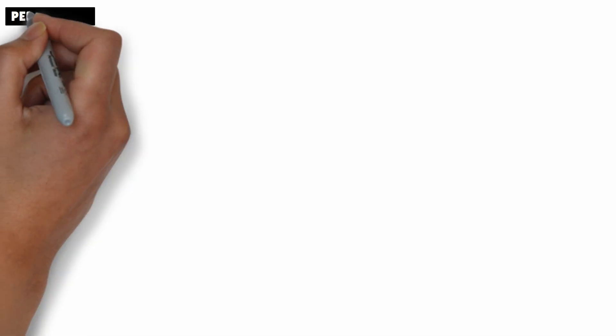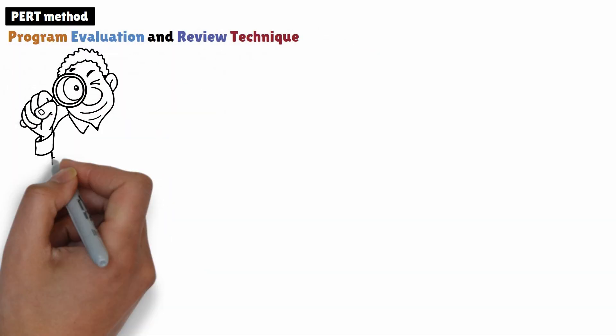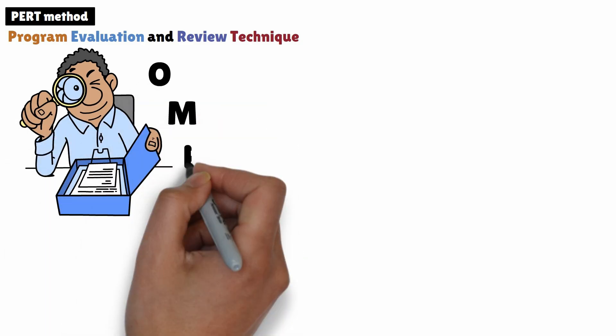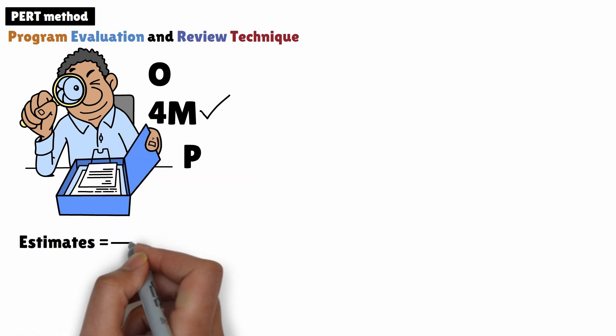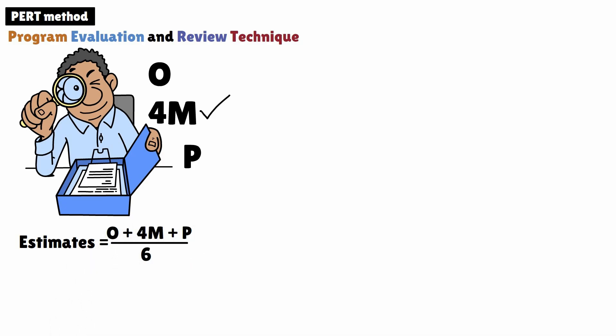Now let's dive into the PERT method. PERT stands for Program Evaluation and Review Technique, and it's a bit more refined. In this method, we recognize that the most likely estimate is usually more reliable and therefore should carry more weight. So instead of giving all three estimates equal weight, the PERT method gives the most likely estimate four times the weight of the other two. In this formula, the most likely estimate has a higher influence on the final result, because it's assumed to be the outcome that will happen most frequently. This approach leads to a more balanced estimate that's closer to what is expected in reality.